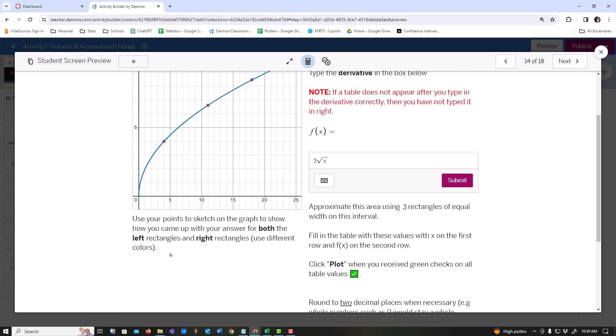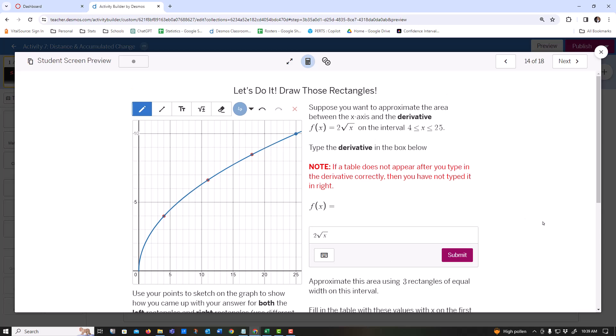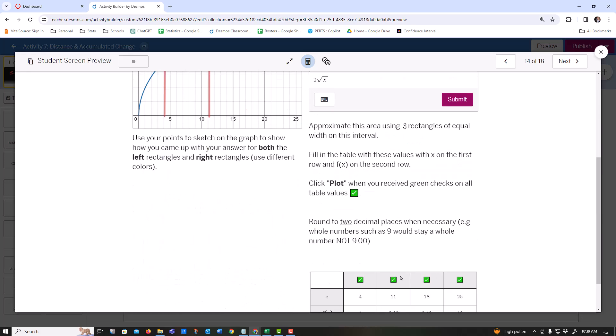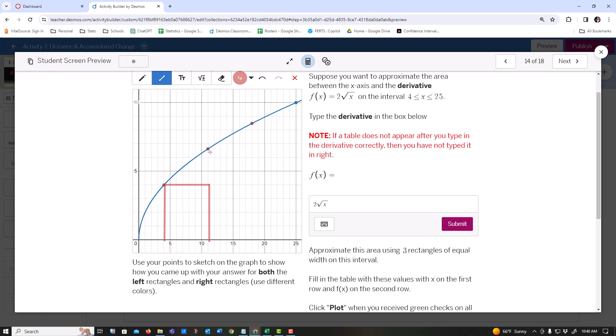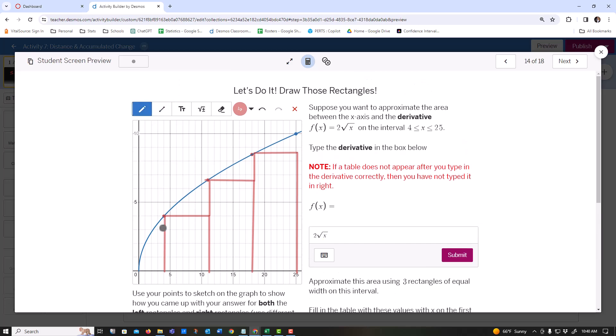Now I want to do a left rectangle and a right rectangle. Let's do a left. A left-hand sum means the left corner is touching that rectangle. There's my first rectangle. It started at 4 and went to 11. Now I'm going to go up to this one, then to 18, and then finally here. If I was going to calculate the area, I'm calculating the area underneath those rectangles.